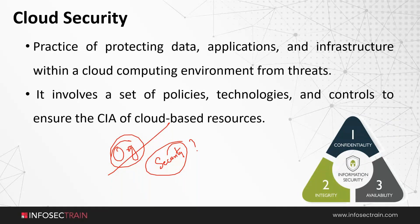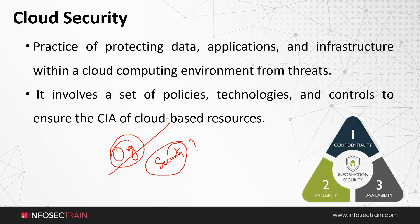Availability is about making sure that only authorized users can access the information, and that they can access it on time. If I am a person who is supposed to access the information, I should be able to get it whenever I need it — no downtime, no issues. The information should be consistently and readily available to authorized users. These are the three main pillars of security.